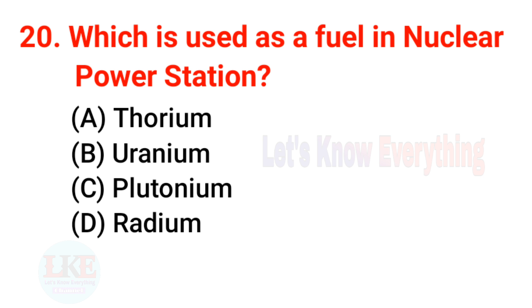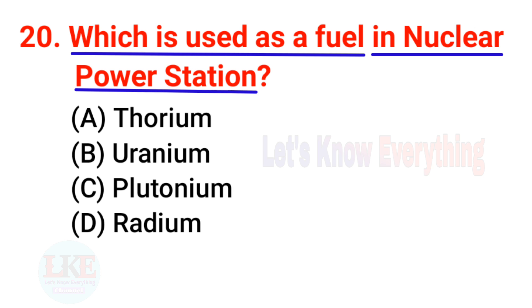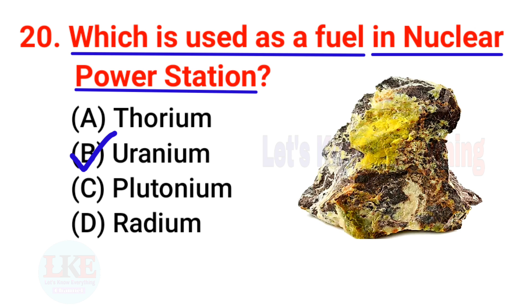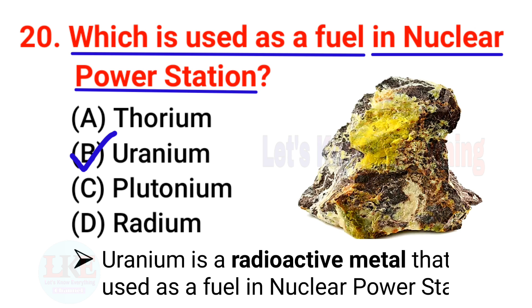Question number 20: which is used as a fuel in a nuclear power station? Right answer, option B: uranium. Uranium is a radioactive metal that is used as a fuel in nuclear power stations.